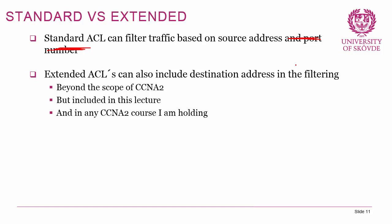With extended ACLs you can say traffic going from this device to that device cannot come in, or you can filter based on port numbers — for example, allowing SSH but not Telnet between two devices. Extended ACLs are briefly included in this lecture because they're important, but if you're in a standard CCNA 2 course they may be beyond the official scope.